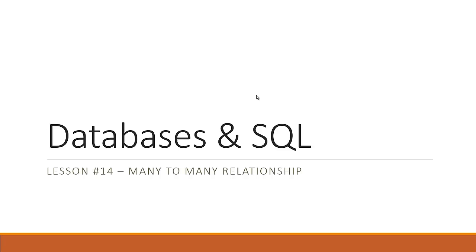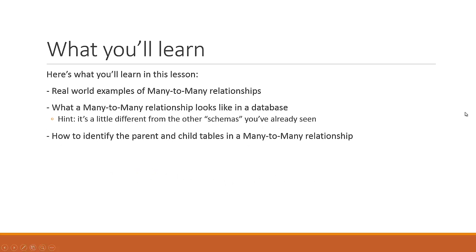Ladies and gentlemen, welcome to lesson number 14, where we will be continuing our talk on the different types of relationships. This one is going to be about the many-to-many relationship. In this lesson, we're going to talk about real-world examples of the many-to-many relationship, what a many-to-many relationship looks like in a database — it's a little bit different from the other schemas you've already seen — and also how to identify the parent and child tables in this many-to-many relationship.